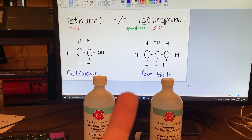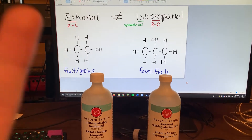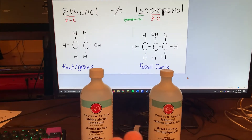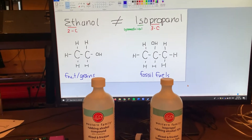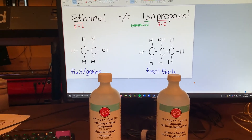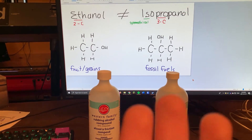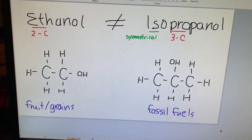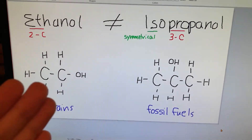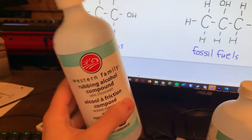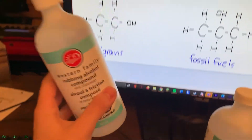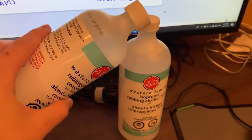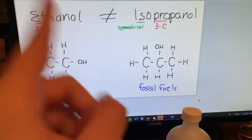Isopropanol, on the other hand, is derived from propane, which comes from fossil fuels and isn't very food safe. Don't drink isopropyl alcohol — it is definitely not the same thing. The only thing we're going to derive from fermentation is ethanol. Anyways, back to the video.